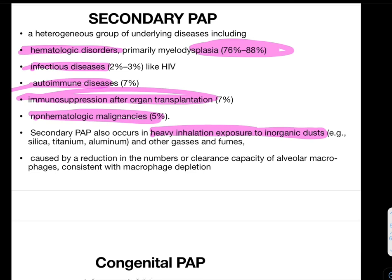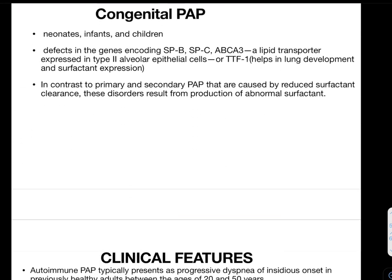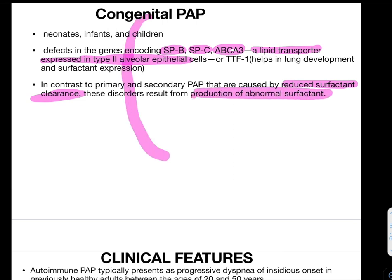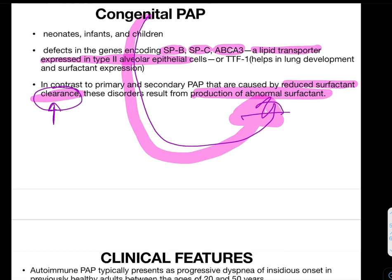Secondary PAP is caused by reduction in number or clearance capacity of alveolar macrophages — either macrophage depletion or reduced clearance capacity. Congenital PAP occurs in neonates, infants, and children and involves defects in genes encoding surfactant protein B, surfactant protein C, ABCA3 (a lipid transporter expressed in type 2 alveolar epithelial cells), and TTF1 (thyroid transcription factor 1). In contrast to primary and secondary PAP caused by reduced surfactant clearance, congenital PAP results in production of abnormal surfactant.